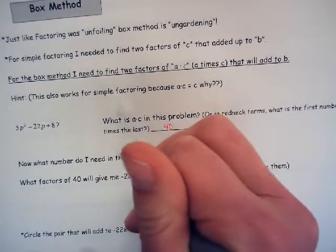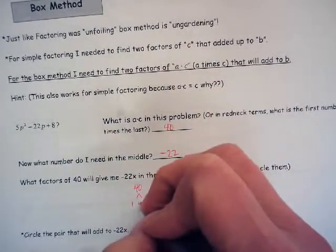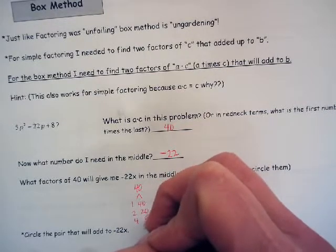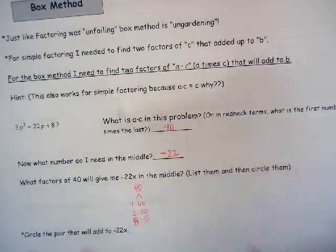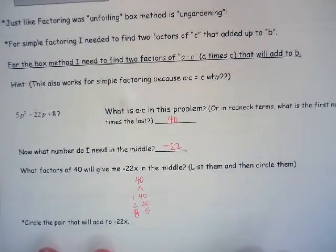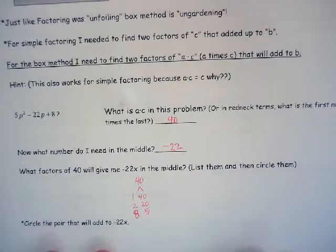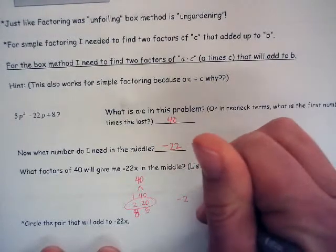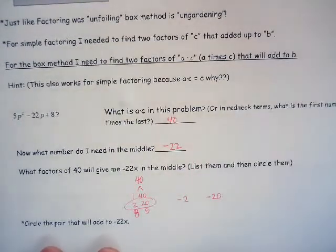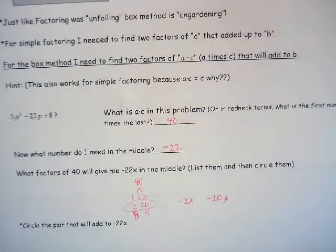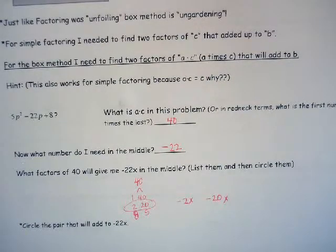Looking at factors of 40: 1 and 40, 2 and 20, 4 and 5, 8 and 5. I can see that 2 and 20 work — if I go negative 2 and negative 20, I get my middle term. Remember, my middle term has an x with it, so I put negative 2x and negative 20x. Those two numbers have to add together to get my middle term.